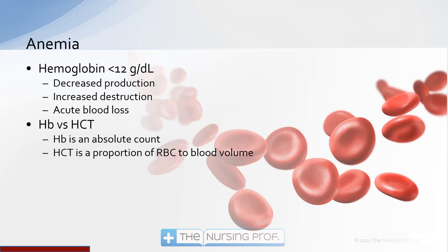When we talk about anemia, we're talking about someone who has a hemoglobin level of less than 12 grams per deciliter. This could be caused by one of three different situations: decreased production of red blood cells, increased destruction of red blood cells, or acute blood loss.